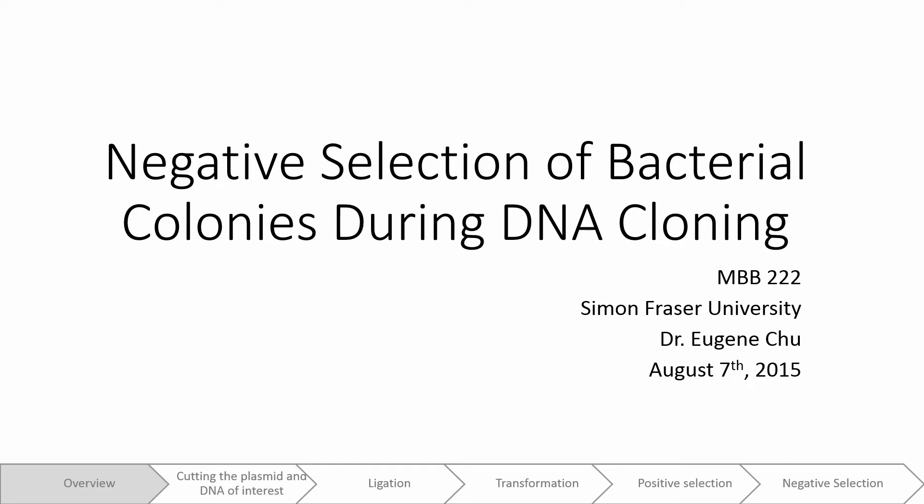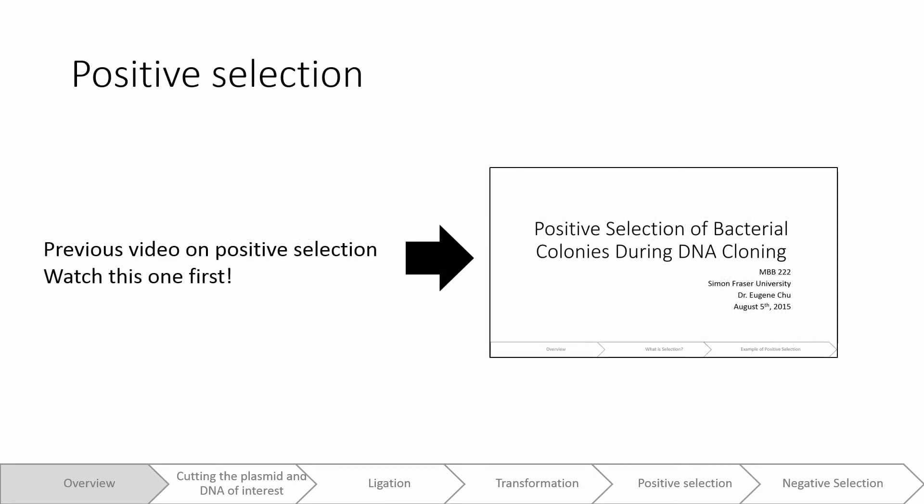Negative selection of bacterial colonies during DNA cloning. Sometimes we may want to use negative selection to identify bacterial colonies that contain our DNA of interest. This video builds on an earlier video that I made about positive selection, so if you haven't watched that one yet, click on this link to watch it before continuing on with this one.